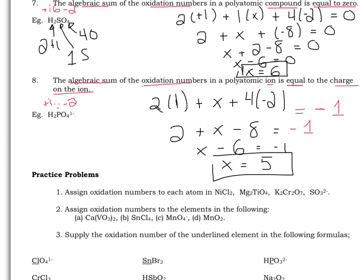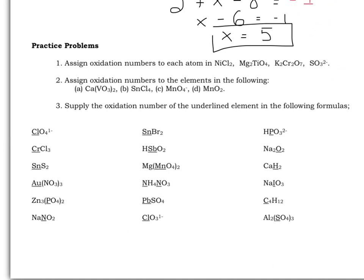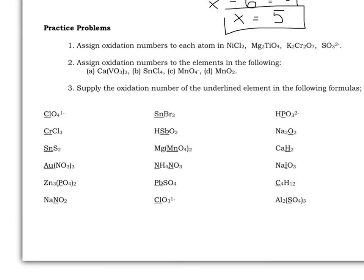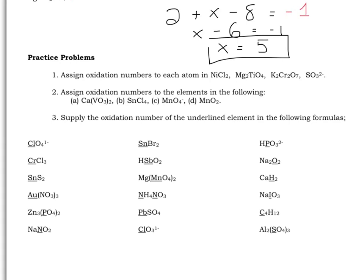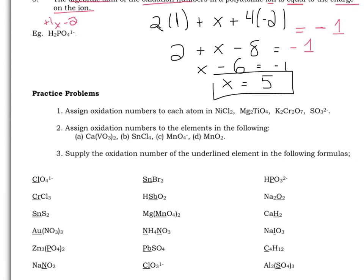Following this are several practice problems — three questions in total. The following page will have all the answers. Assigning oxidation numbers is going to be the most important part of electrochemistry, because without assigning oxidation numbers you won't be able to follow the movement of electrons through reactions. It's very important that you try all of these questions and understand them. Please try them before taking them up, and if you have any questions, contact me.